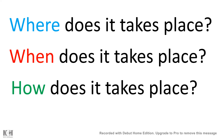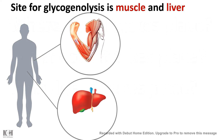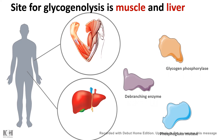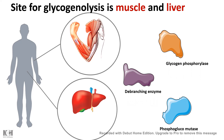The site for glycogenolysis is muscle and liver — that answers where it takes place. But why does it take place in muscle and liver? Simply because all the essential enzymes — glycogen phosphorylase, debranching enzyme, and phosphoglucomutase — are present in the liver and muscle.